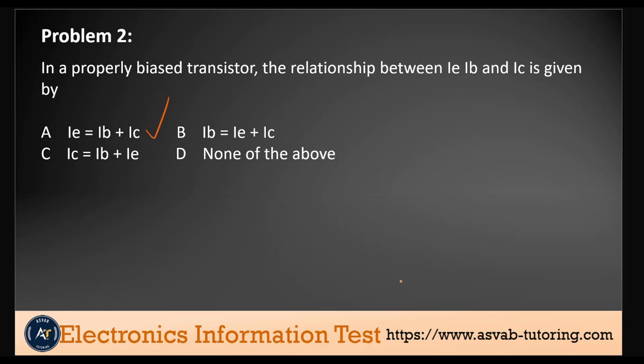The base emitter junction is forward biased, while the base collector junction is reverse biased. At this condition, the relationship between LE, LB, and LC is given by LE equals LB plus LC.